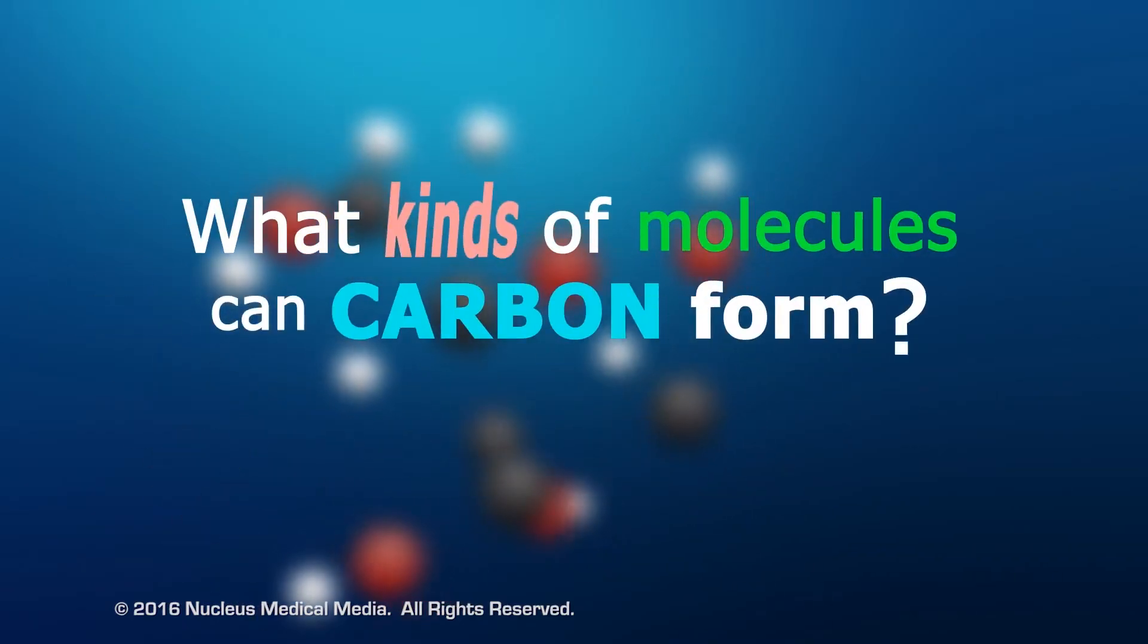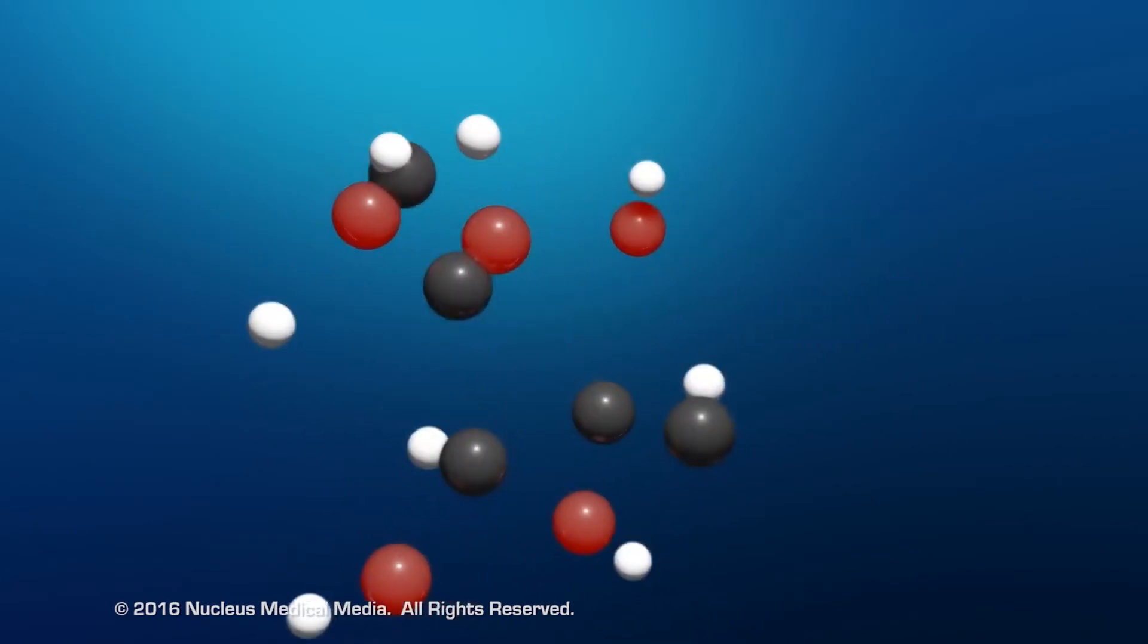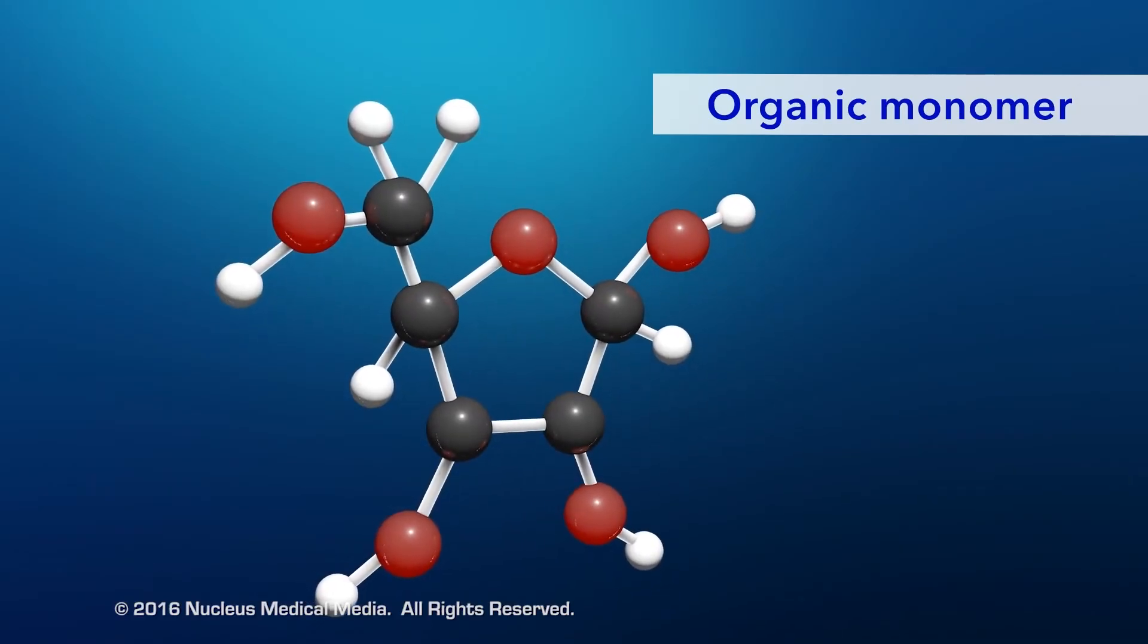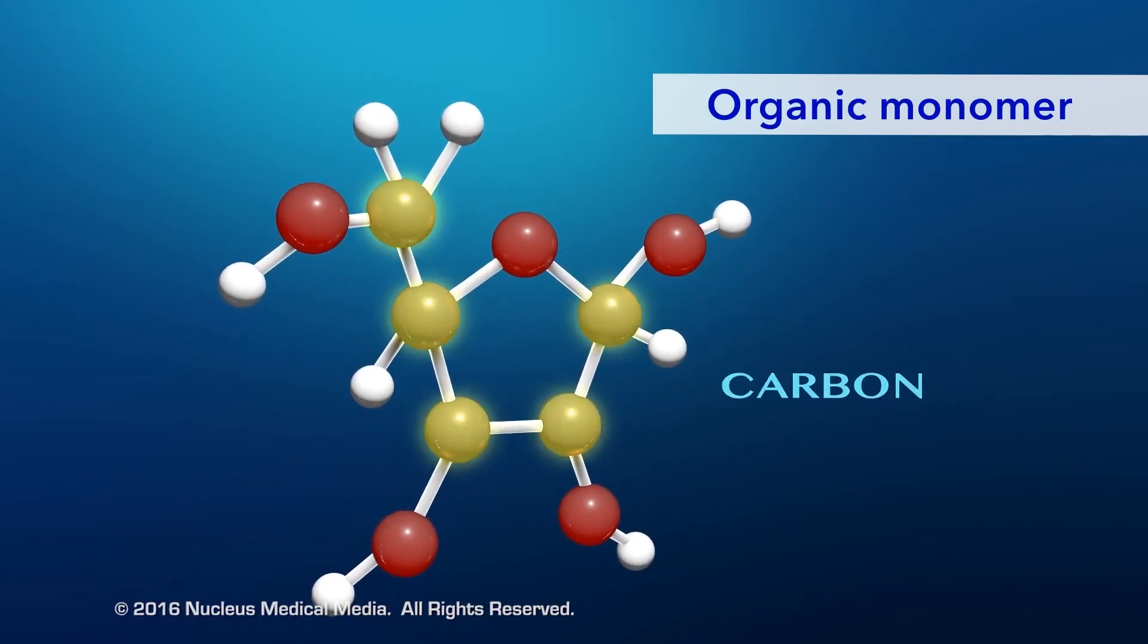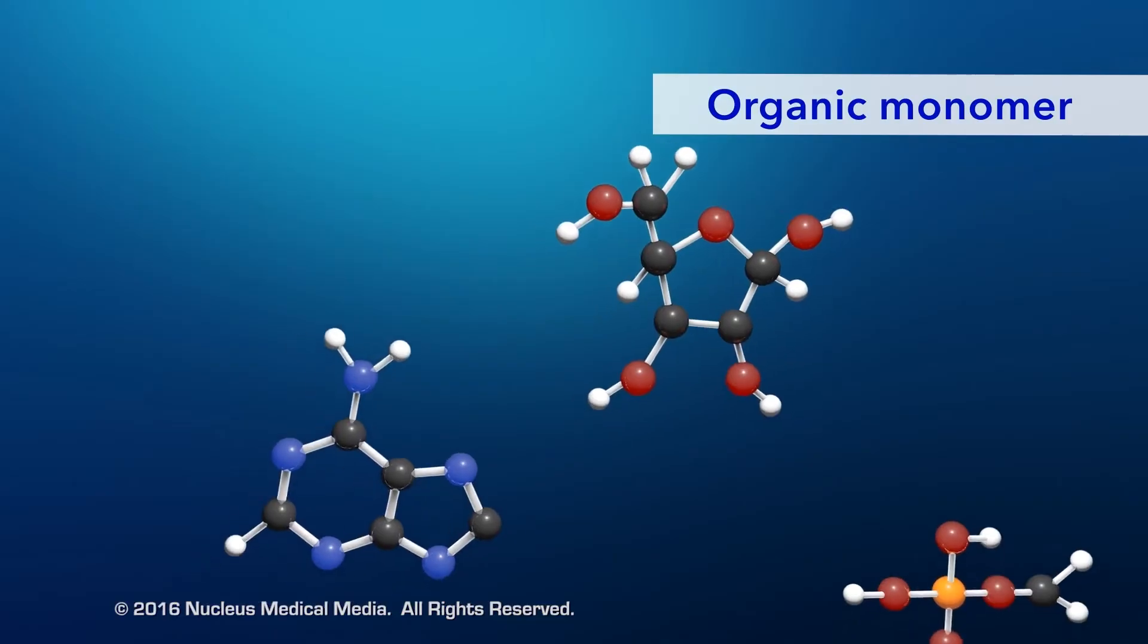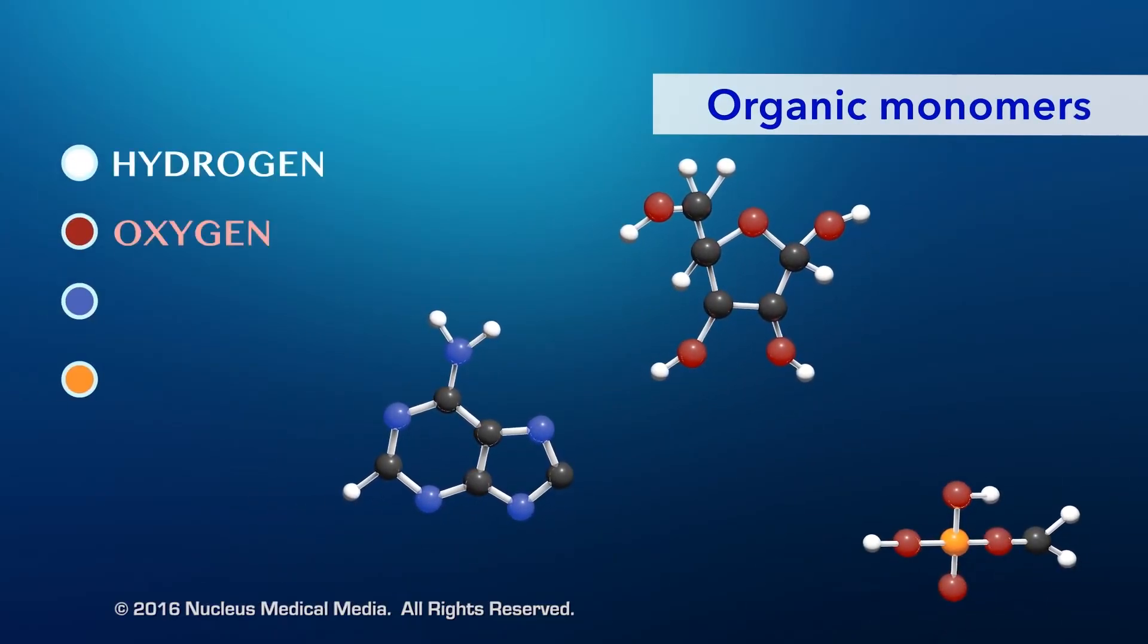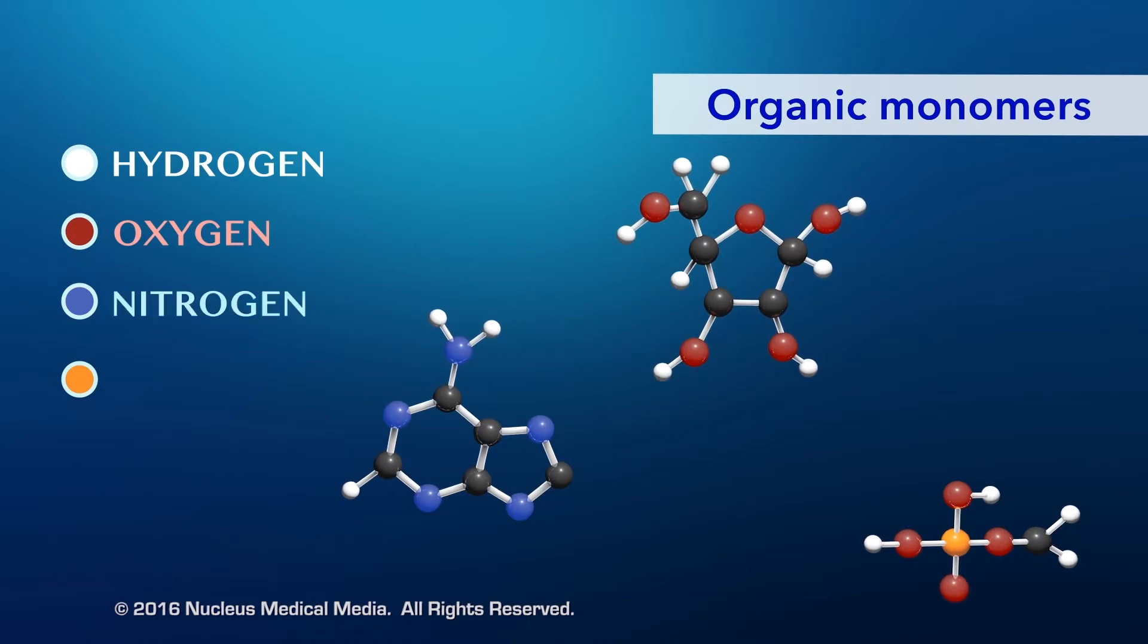So, what kinds of molecules can carbon form? Well, small organic molecules called monomers are chemically bonded atoms that always include carbon. In addition to carbon, organic monomers usually contain hydrogen and oxygen, possibly along with nitrogen or phosphorus.